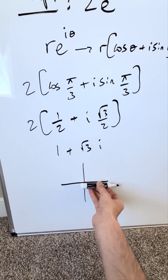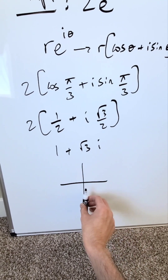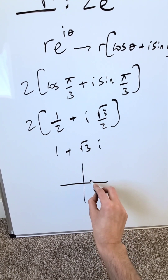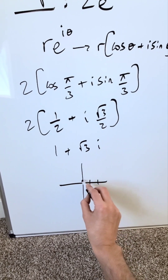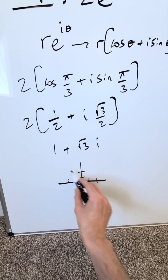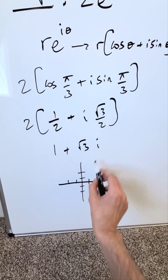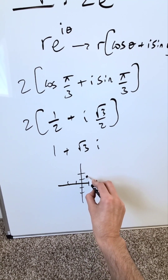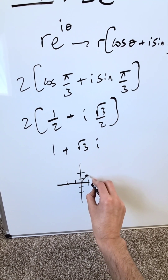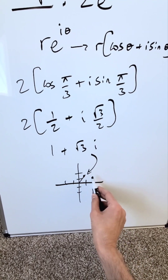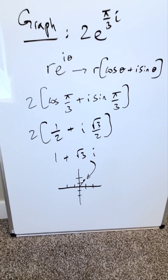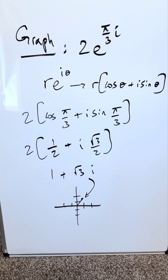You'll graph this on a complex plane. Your x-axis is your real axis. Your y-axis is your imaginary axis. You're looking 1 across and √3 up, and it would be somewhere right over here, and you can connect it with the origin. This right here is a graph of 1 plus √3·i.